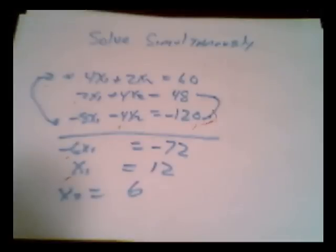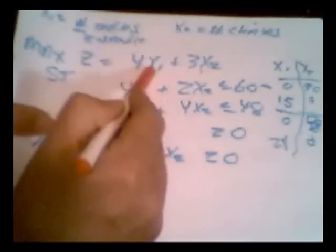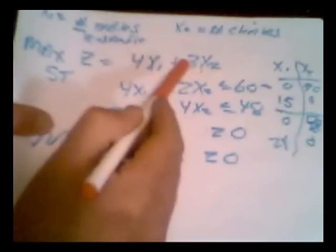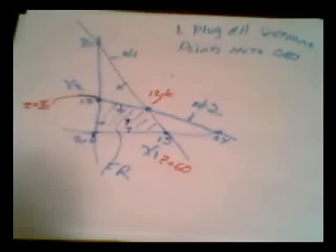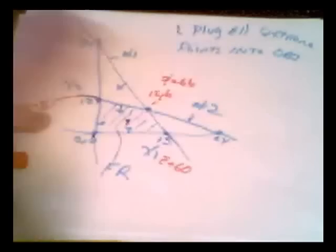Okay, so now, yeah, 12, 6 is that point. 12 tables and 6 chairs. And we plug that point back into the original objective function, 12 and 6. 12 and 6 added together, provides a Z of 66. So that's the optimal point right there.